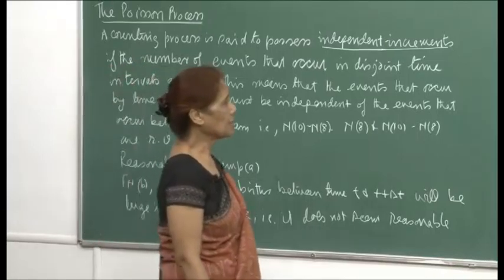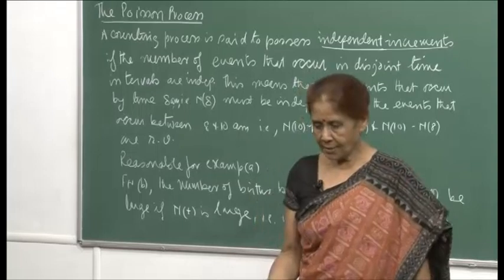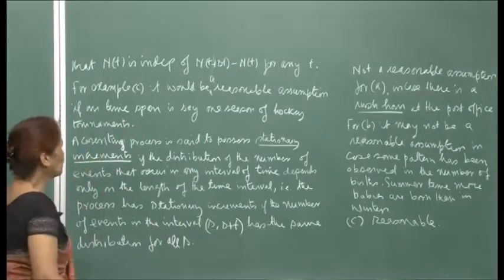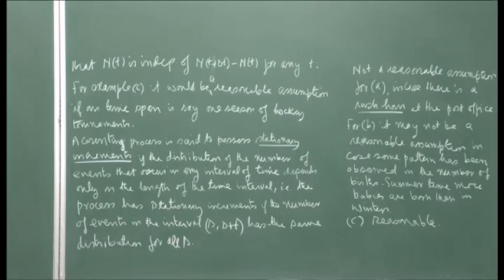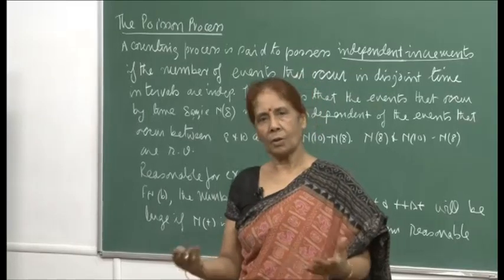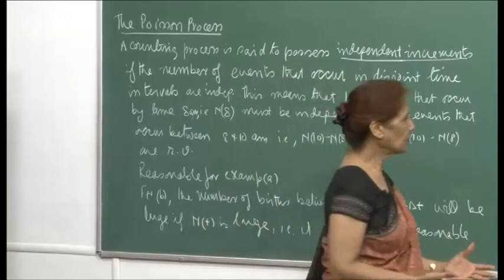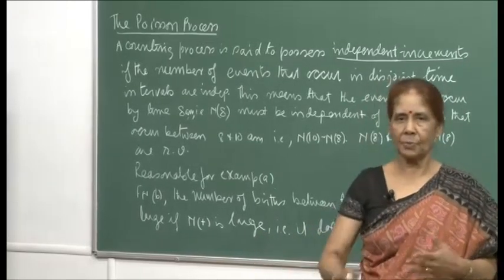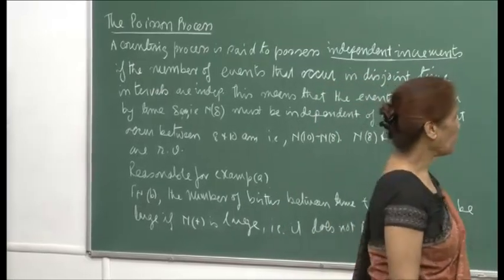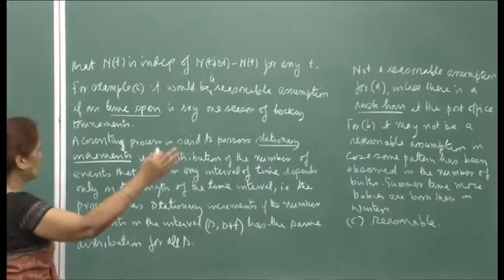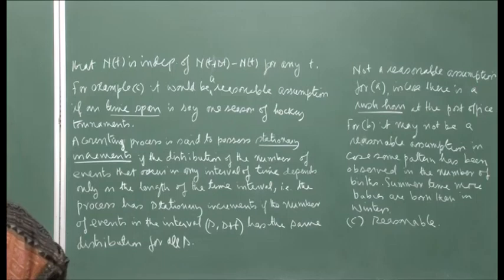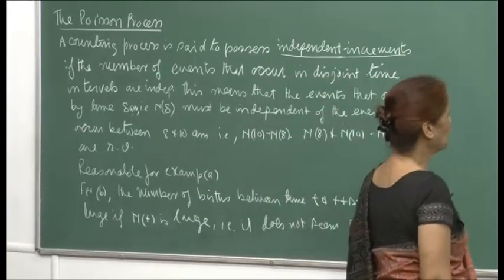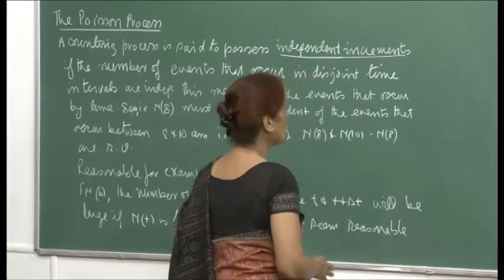For example C — the number of goals hit by a hockey player — if you take the time span to be one season of hockey tournaments, we expect the hockey player to continue to have a good form. The number of goals hit up to time t and from t to s plus t should be independent. However, if I take the time span to be two years, one cannot maintain form for two years. So if you restrict your time span, then the independent increment assumption would be reasonable for C.